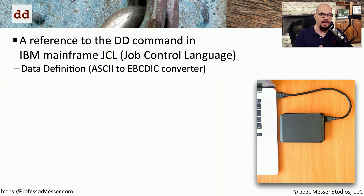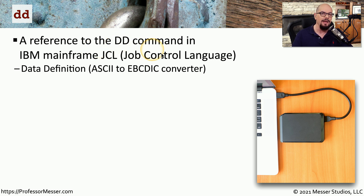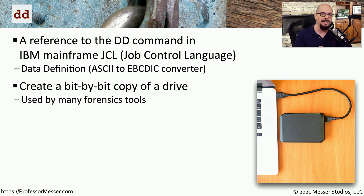If you've ever imaged a drive or a partition in Linux, then you've probably used the dd command. The term dd comes from another dd command that was originally on IBM mainframes, and those use the job control language, or JCL, to operate. dd is a reference to the data definition that converted between ASCII and EBCDIC on the IBM mainframe. dd allows you to create a bit-by-bit copy of all of the information that may be on a drive or in a directory.